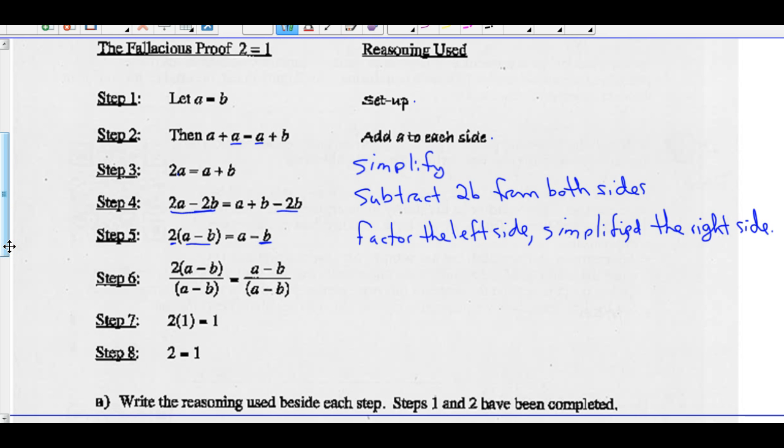Step 6, what's happening? Well, we're going to divide A minus B from both sides. Well, if we do that, A minus B divided by A minus B is 1. If I simplify then, 2 times 1 is 2, and 1 equals 1. Looks like I've proven this, 2 equals 1.